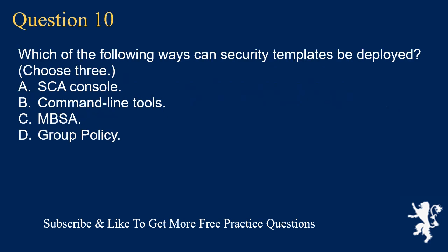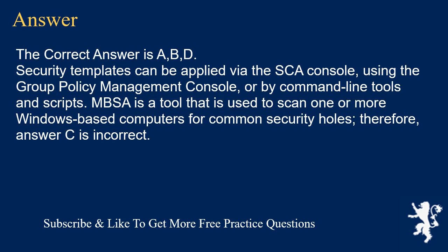Question 10. Which of the following ways can security templates be deployed? Choose 3. A. SCA console. B. Command line tools. C. MBSA. D. Group policy. The correct answers are A, B, and D. Security templates can be applied via the SCA console, using the group policy management console, or by command line tools and scripts. MBSA is a tool that is used to scan one or more Windows-based computers for common security holes. Therefore, answer C is incorrect.